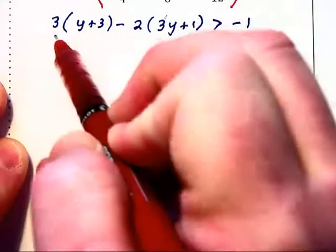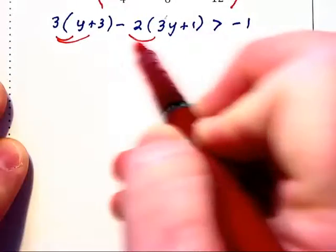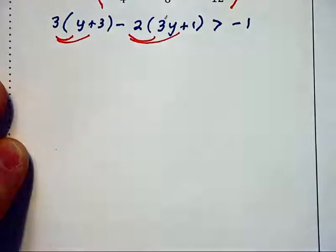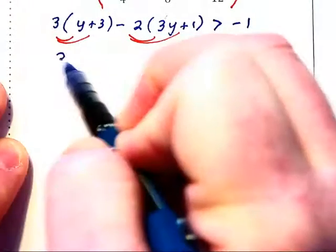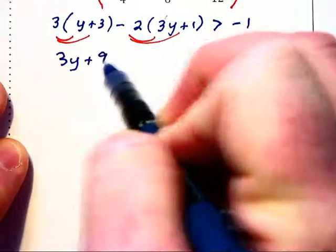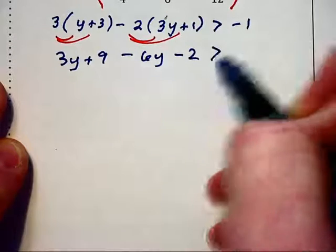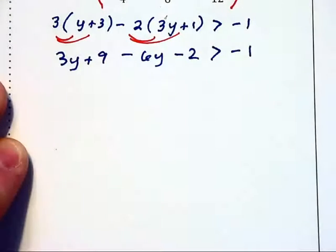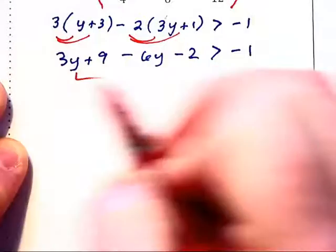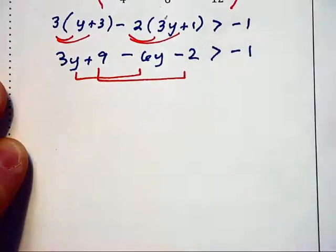Now we are going to do some distribution on the left hand side of the equation. The left side becomes 3y plus 9 minus 6y minus 2, then greater than the negative 1. We will then combine like terms on the left side of the equation.